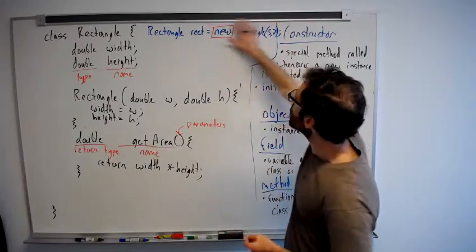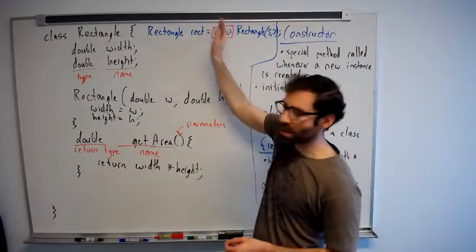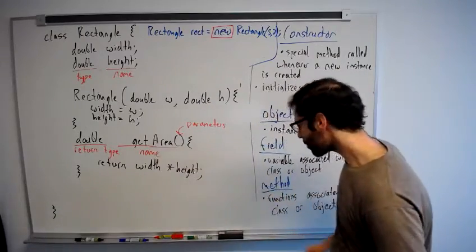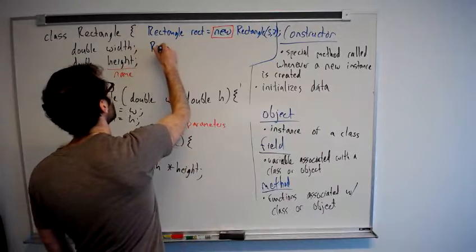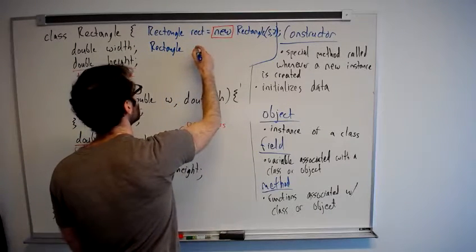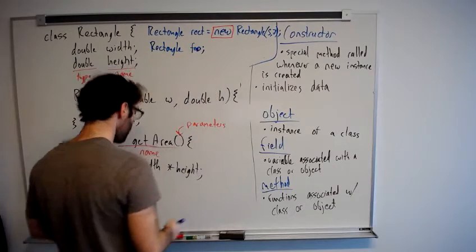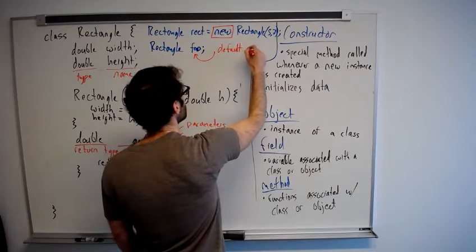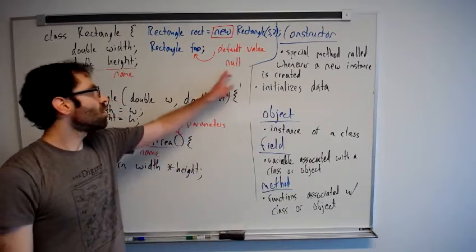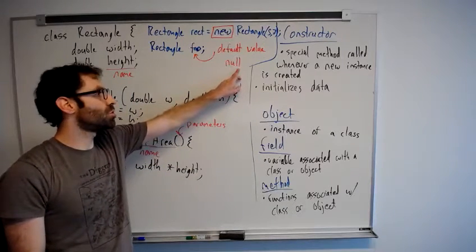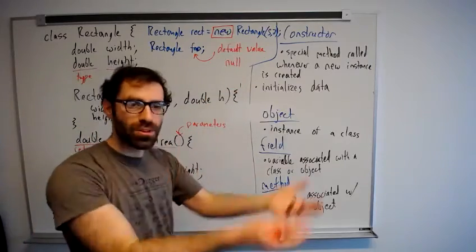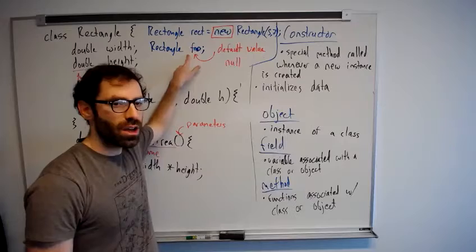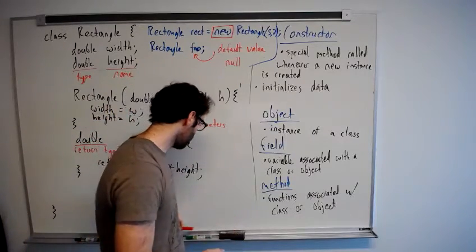And if we hadn't given it this initial value, new Rectangle, and just done Rectangle rect semicolon, it would take on its default value, which for all object types is null. The default value null, all lowercase, is a special value in Java meaning just the absence of any value. So uninitialized object variables have the value of null.